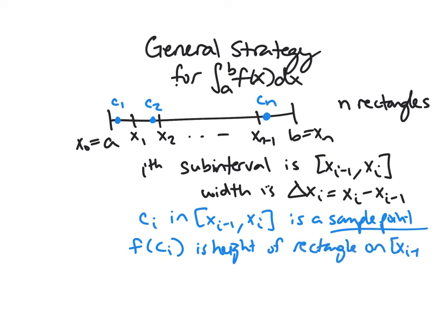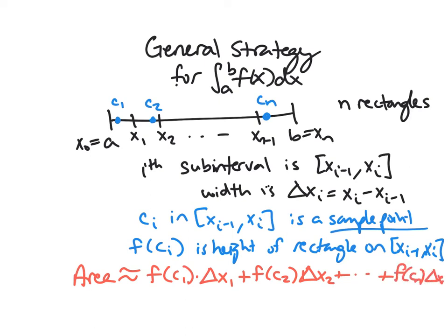And so this actually tells us how to get everything. So what is our area going to be? Well, we can approximate by adding up all these rectangles. So my very first one is going to have height f of c1 and width delta x1. Then my next one has height f of c2 times width delta x2. And you keep going. And then the very last one, you plug in cn and you do delta xn. And so this is an approximation. And of course, it's going to depend on the number of rectangles, how accurate this is.